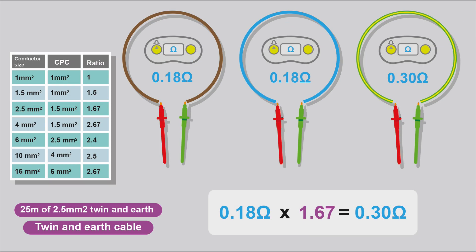So as you can see here, if we had 25m of 2.5 twin-and-earth cable, the line and the neutral would give you a value of 0.18 ohms end-to-end. The CPC would give you a reading of 0.3 of an ohm end-to-end. So say you're doing your continuity of ring final conductors, you're doing end-to-end resistance of your line and your neutral and you're getting 0.18 of an ohm. You can calculate what you should be getting for the CPC.